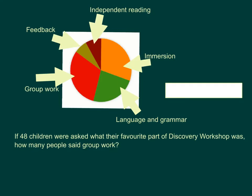Now when I'm solving this question, I know that group work represents about a third of my total amount. Now my total amount is 48. And of that 48, my group work represents a third of it. So what I'm doing is I'm going to take my 48 and divide it by 3 to find a third. This means that one section is 16. So a third of my 48 children is 16, so therefore 16 children said they like group work.